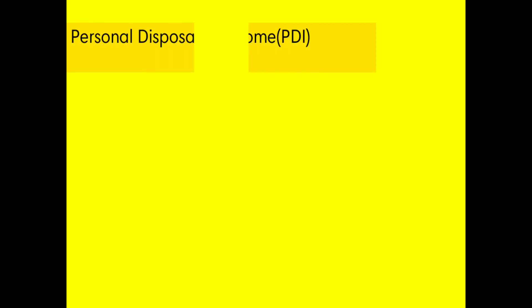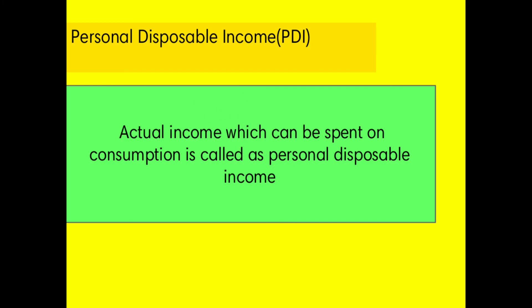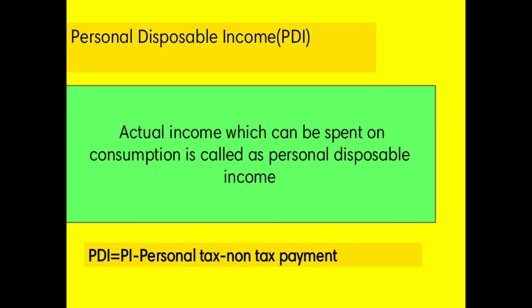The sixth identity is Personal Disposable Income. The actual income spent on consumption is known as personal disposable income — the money which you spend to satisfy your wants. The formula is PDI equals PI minus personal tax minus non-tax payment.